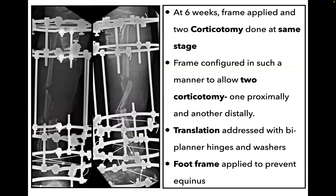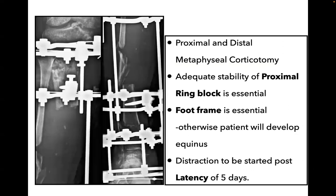At six weeks, the external fixator was removed, skin graft was healed, and the frame was applied. Proximal and distal corticotomy was done at the same stage. Translation at the fracture site was addressed with biplanar hinges and washers at a later date, and a foot frame was applied to prevent equinus. Both corticotomies are done with a freehand technique, and adequate stability of the proximal ring block is essential. Foot trim is also essential; otherwise the patient will develop equinus.